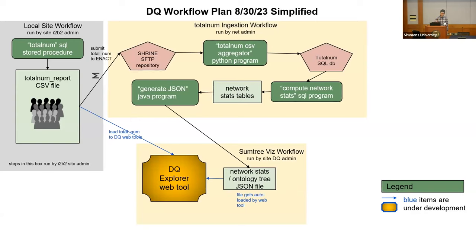The network statistics — averages and standard deviations — get fed into a data quality explorer tool available on the web with security so only ACT users can access it. However, the local data that might have privacy concerns — those individual counts for all your data types — stays with you. You send it off to Harvard to generate the network statistics file, but it's never available on the web; you load that file manually into the data quality explorer.